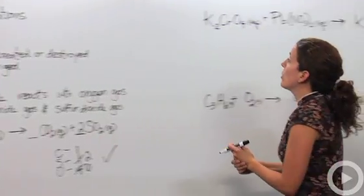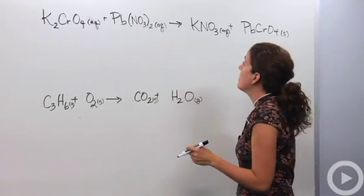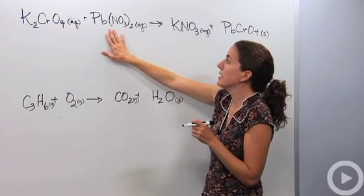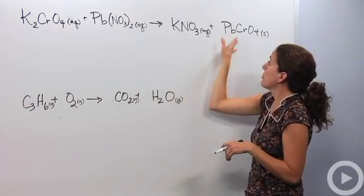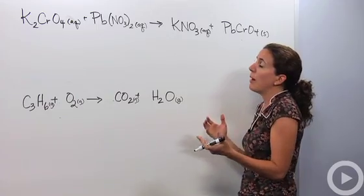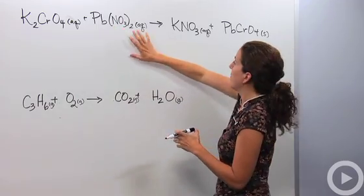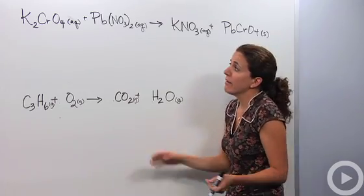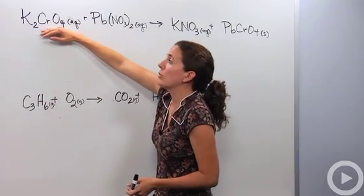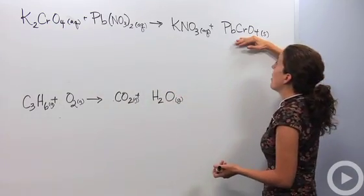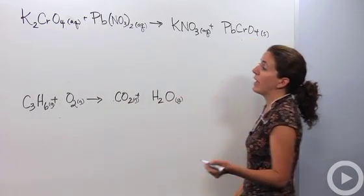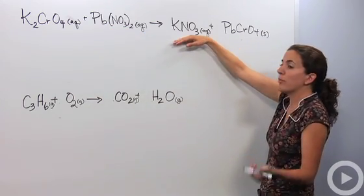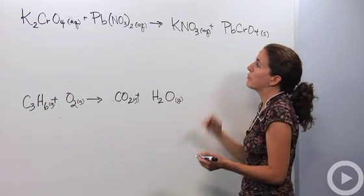Let's do something a little more complicated. We have the reaction: potassium chromate plus lead(II) nitrate yields potassium nitrate plus lead(II) chromate. We want to balance this properly, but there are a lot of atoms involved. Before jumping in, we should notice a pattern — we have a chromate polyatomic ion on both sides, and a nitrate polyatomic ion on both sides. We can keep those together rather than separating the nitrogen and oxygen out.